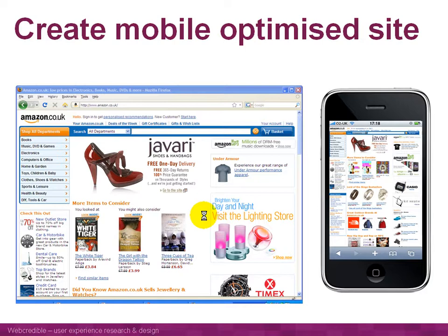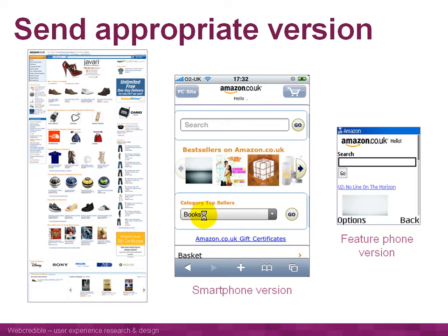So if you're serious about having a mobile website, especially about doing e-commerce on a mobile phone, it's important to create a version of your website optimized for mobile phones — one that's going to be easy to use. When someone comes to your website, you want to detect what kind of device they're using and automatically send them the appropriate version.